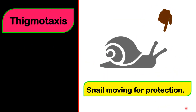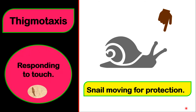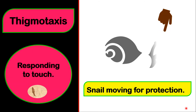In thigmotaxis behavior, the organism is responding to touch. For example, if you should try to touch a snail, the snail will crawl under its shell for protection, moving away from the stimulus of touch. This is a negative response to touch — moving away from the stimulus.